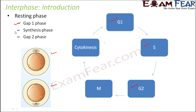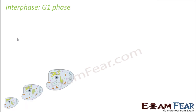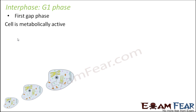G1 is the first gap phase. S is the synthesis phase. And G2 is the second gap phase. The term 'gap' means it is a break — like when you work really hard, you need a break in between. So this is also a break phase or a gap phase.